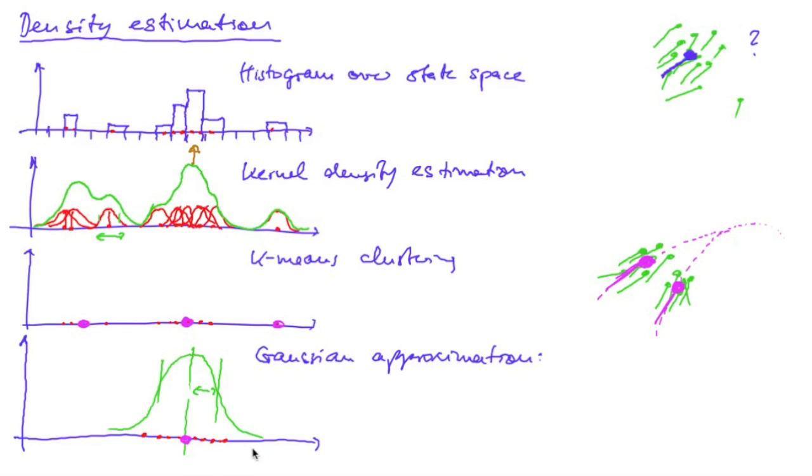Now this is particularly easy to compute. On the other hand, it only makes sense if the distribution of our particles is unimodal. Now due to its simplicity, this last option is very popular.